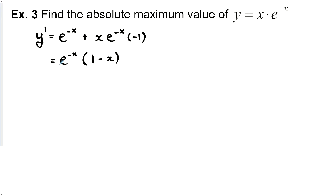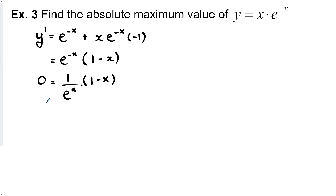I'll rewrite this so it's clearer: e to the negative x is 1 over e to the x, times the quantity (1 minus x). There are no non-permissible values here — e to the power of x is never going to equal zero, so that's not a problem. We set this equal to zero to find our critical values, and none come from the denominator, so we're just looking at the binomial: x equals 1 is our critical value.